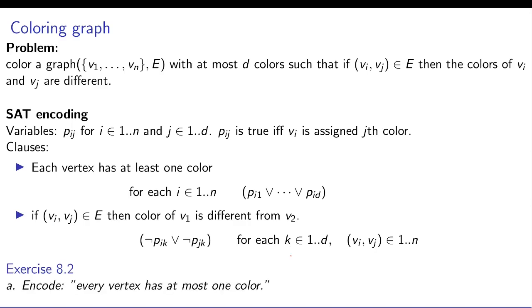One bit to notice is that we have not really encoded every vertex has at most one color. The constraint which we have written down allows more than one color. That means more than one bit can become true here. Then it's not exactly solving the graph coloring problem as stated.